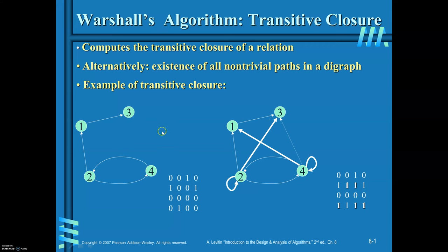First we will see how to write the adjacency matrix. For this graph we can write the adjacency matrix like this: from 1 to 1 there is no edge, write it as 0. From 1 to 2 there is no edge, write it as 0. From 1 to 3 there is an edge, write it as 1. This adjacency matrix will give you information about the graph — whether there is an edge from i to j. If there is an edge from i to j then the ith row and jth column will have value equal to 1. For example, from 2 to 1 there is an edge so write it as 1, and 2 to 4 there is an edge, write it as 1.